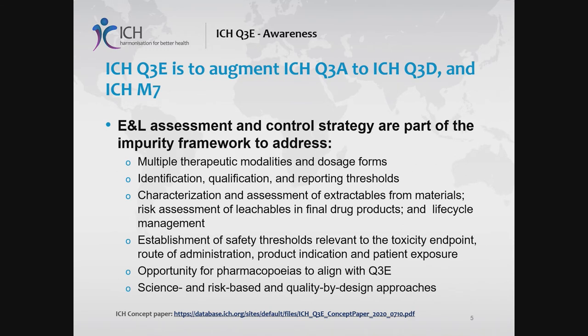What is the objective of Q3E? There are existing quality guidelines to deal with impurities — ICH Q3A, B, C, D, and also ICH M7 — but E&L assessments and control strategies are part of this impurity framework. We want to address multiple therapeutic modalities and dosage forms, and apply the principles of identification, qualification, and reporting thresholds as in the Q3 series. We need to characterize materials that come into contact with the drug product — both direct and indirect contact — to enable risk assessment of leachables that may be present in the final drug product, because that's where patient safety counts.